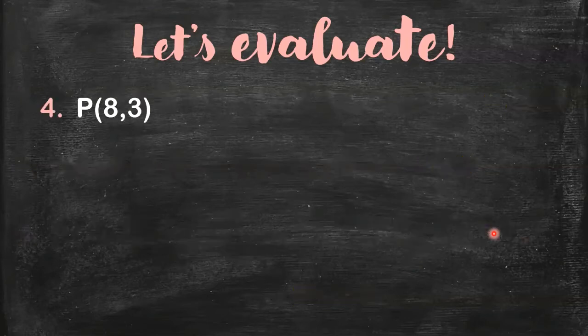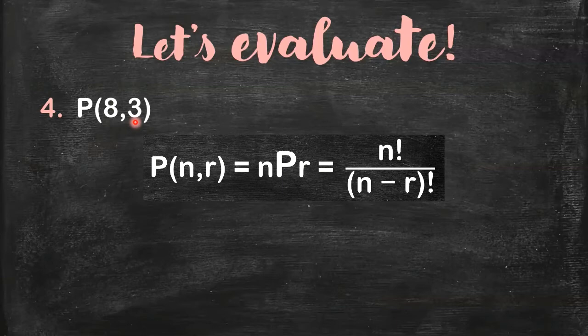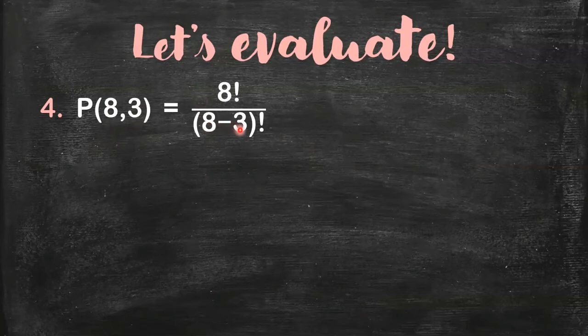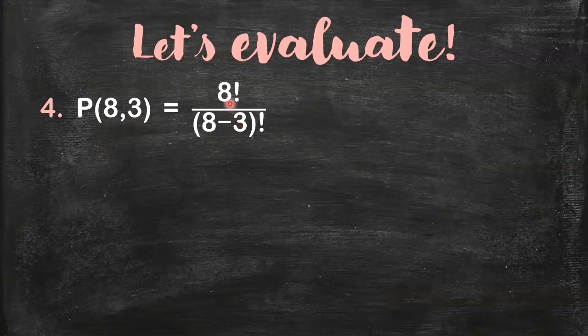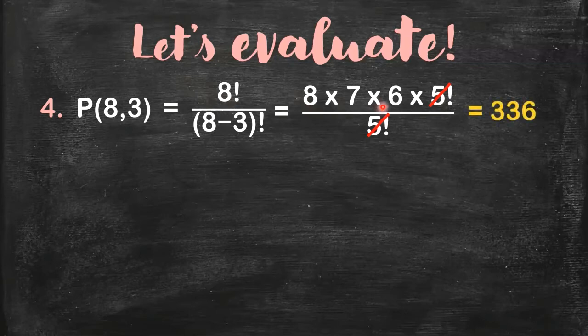Let's evaluate more permutations. Number 4. So this is the same - n is different from r. So all you have to do is to recall again the formula. It's n factorial over (n-r) factorial. And again, what is 8 minus 3? 5. So you have 5 factorial in the denominator. Do not expand 5 factorial. For the 8, you're just going to write 8 factorial as 8×7×6×5 factorial. So they will cancel out again. Then you just get 8×7×6. And you're going to have 336.